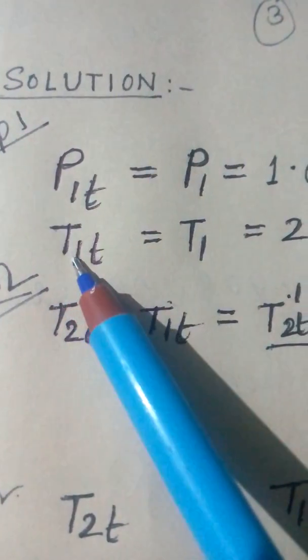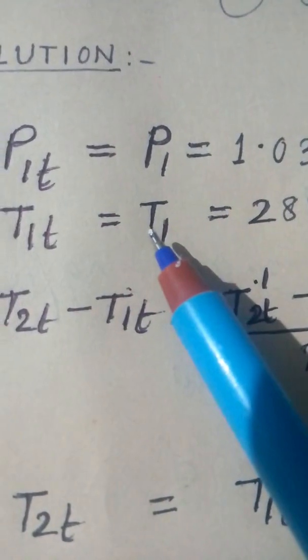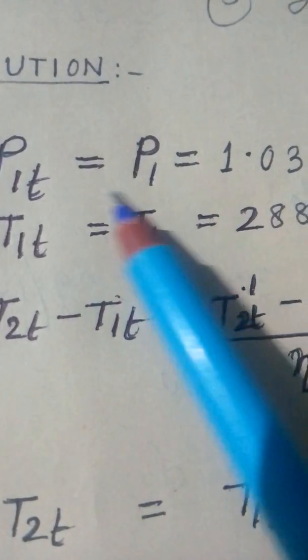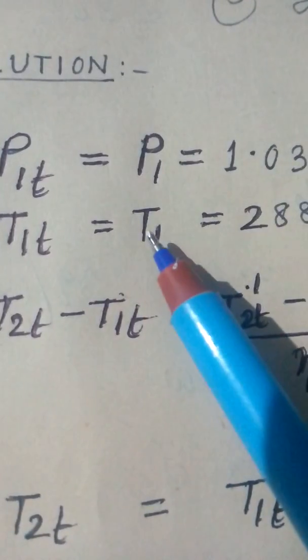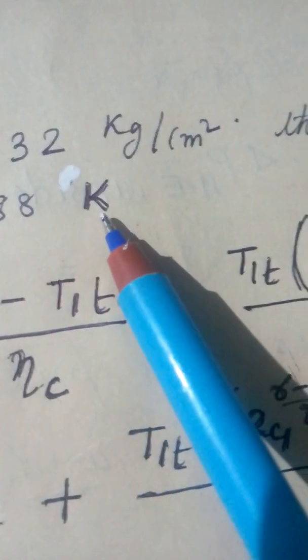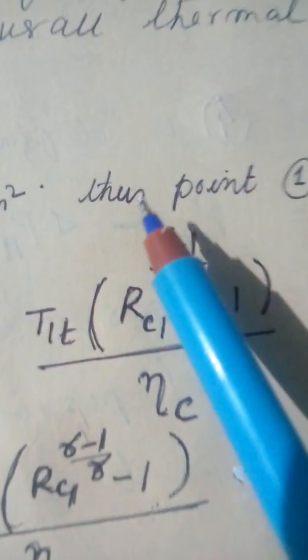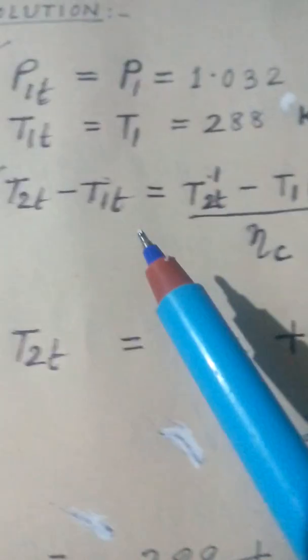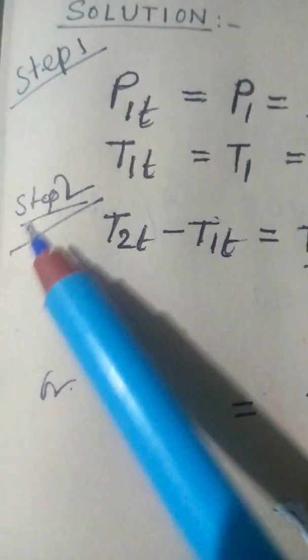Head temperature is equal to T1. Here also the velocity is 0, so this is also dynamic temperature is 0. So it is also static temperature T1, 288 Kelvin. Thus point 1 is defined completely. Then come the step 2.